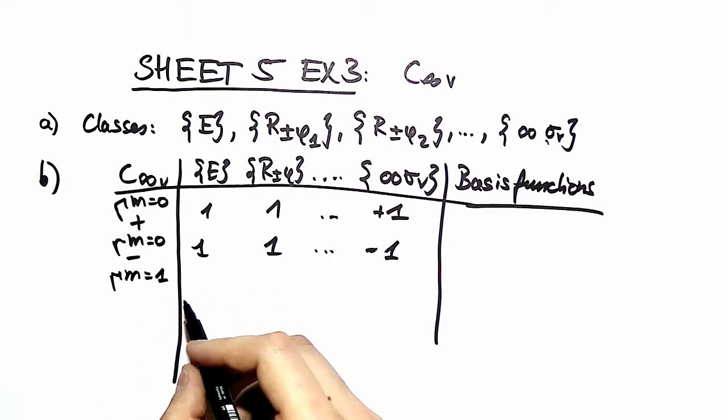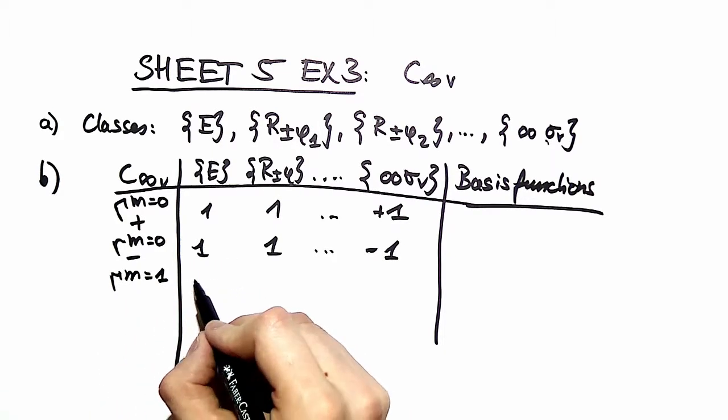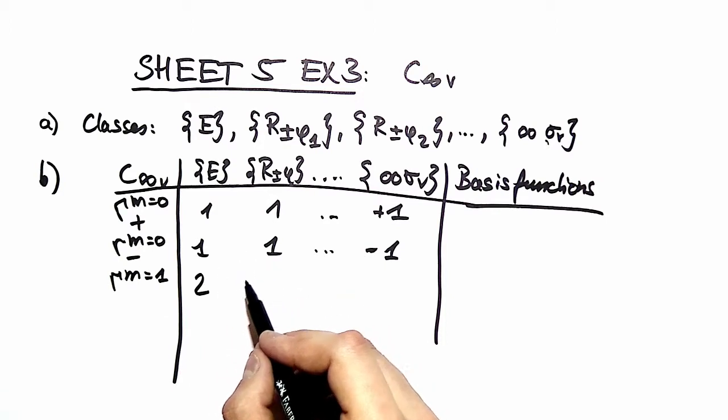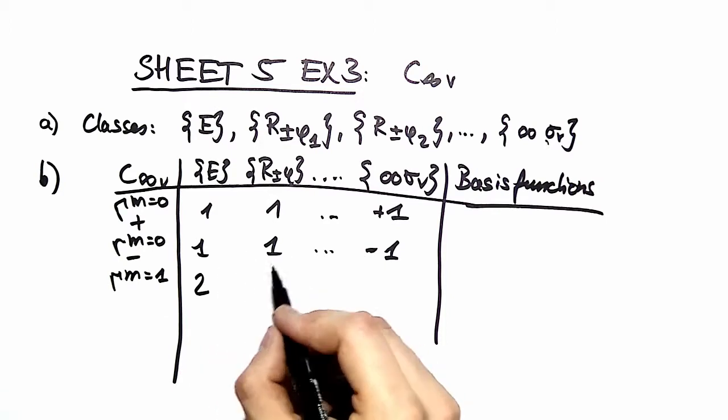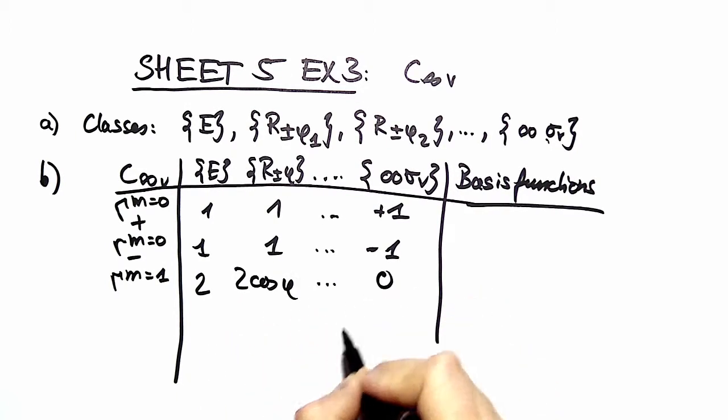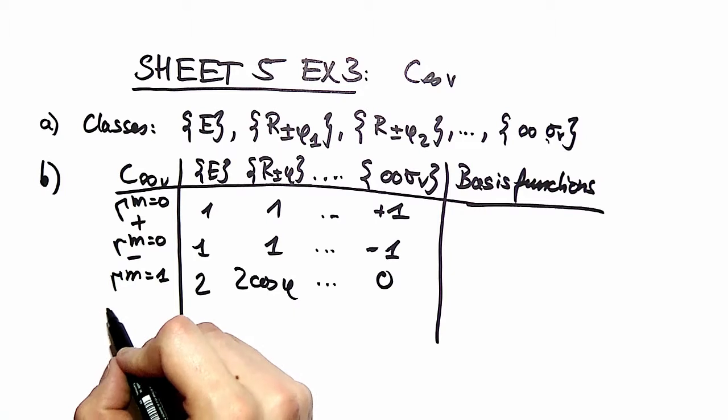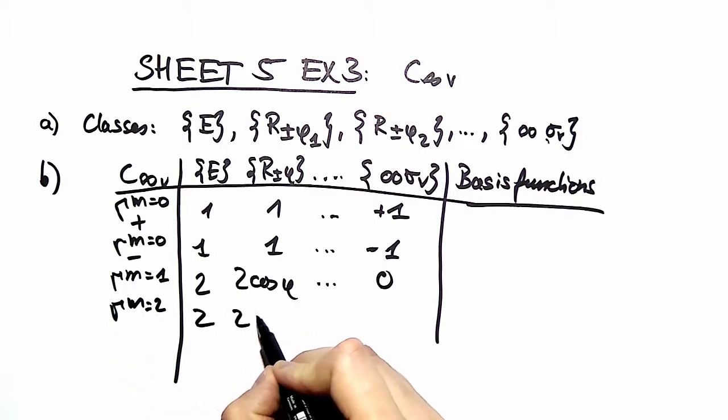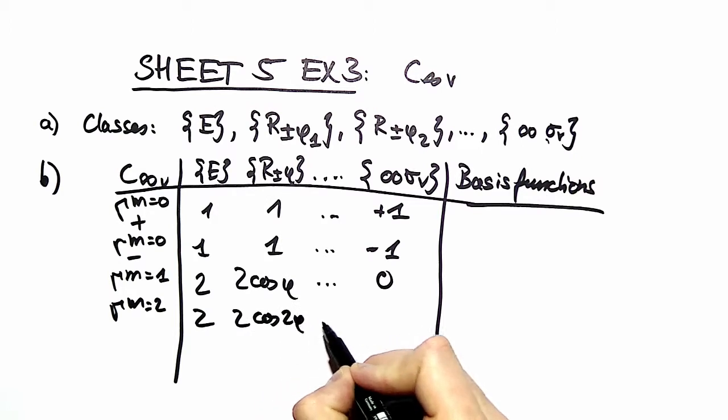The gamma m1 representation is a two-dimensional representation. You have the matrix with cosine minus sine, sine cosine. If you take the trace of it we have two cosine phi, and here you have zero. For m equal to two, all you do is you double that angle.